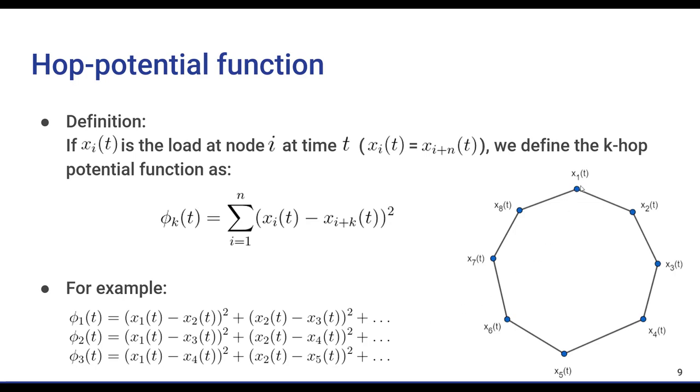As we can see, x1 at time t and x3 at time t denote our loads at time t in these respective bins. And since bins 1 and 3 are a distance of exactly 2 away from each other, their differences squared will be included when computing phi2 at time t.